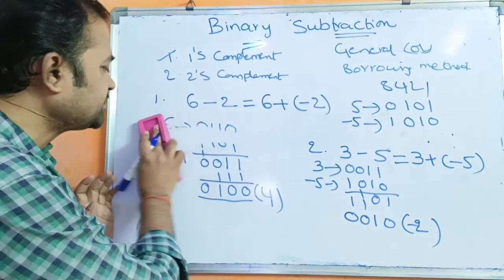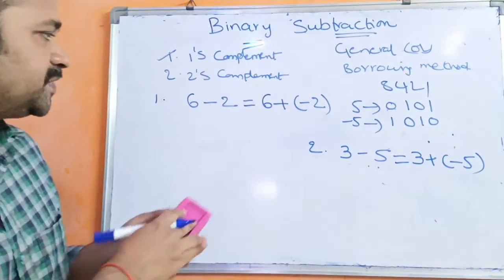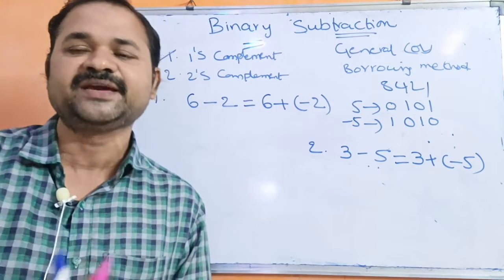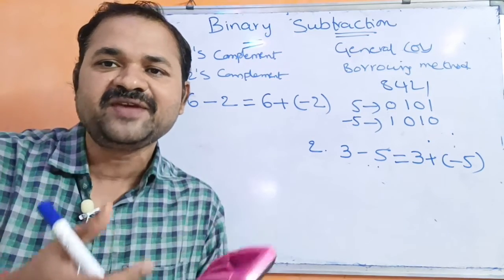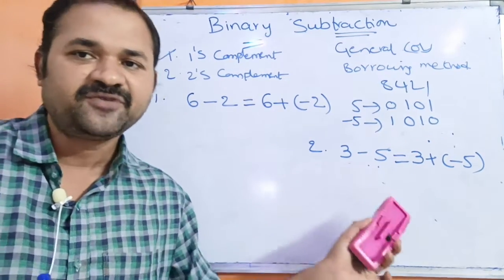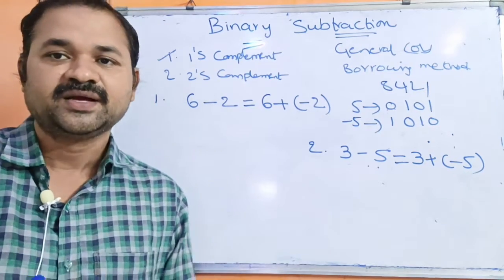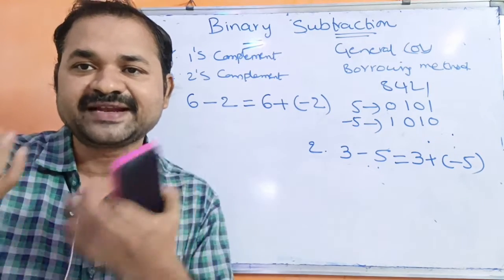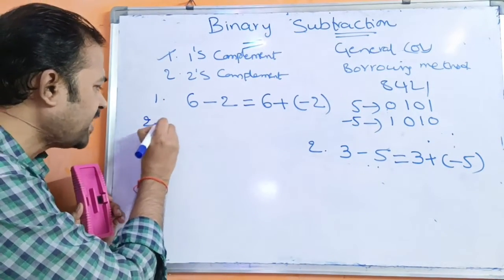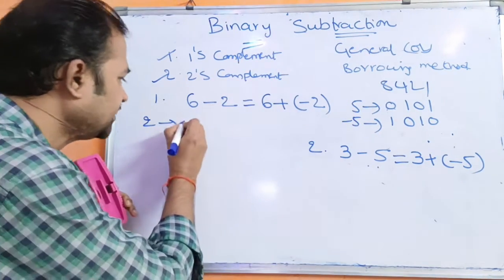Now let us see the second approach using the same examples. Here also we have two steps. Step one: after performing the addition, if we get any carry, simply ignore the carry and the result is a positive number. Step two: if we don't get any carry, the result is a negative number in two's complement form, so calculate the two's complement to get the decimal. For the first example, we represent minus 2 in two's complement: 2 is 0, 0, 1, 0.